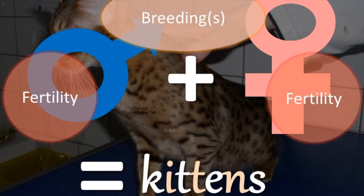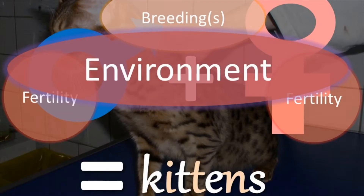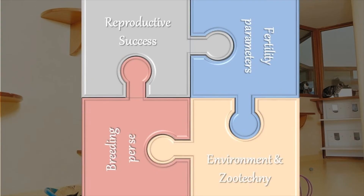And it's already quite complex. We can even add another layer of complexity on top of that — it's the environment. A couple of years ago when I was doing these talks, I was only focusing on the male and the female. Then it hit me: when it comes to breeding cats, when it comes to cat breeding in general, the role the environment plays on those parameters is essential. So to obtain reproductive success, you need all the different pieces of the puzzle.